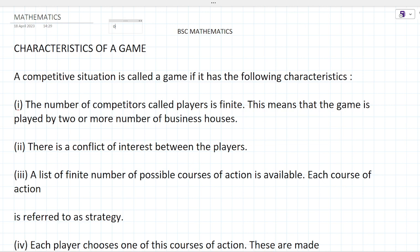BSc Mathematics, LPP Game Theory. Characteristics of a game: a competitive situation is called a game if it has the following characteristics. The first is that the number of competitors, called players, is finite — this means that the game is played by two or more players, such as business houses.